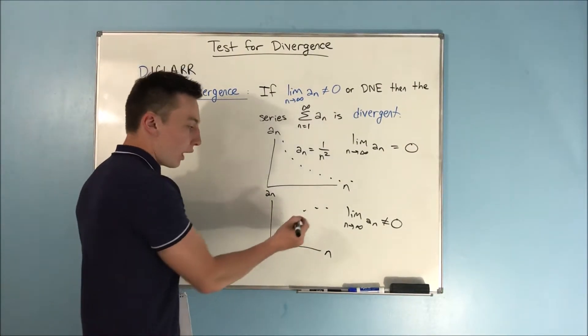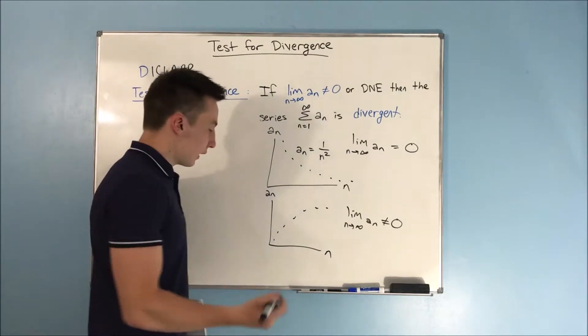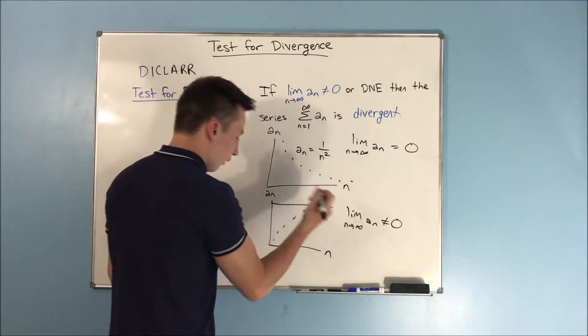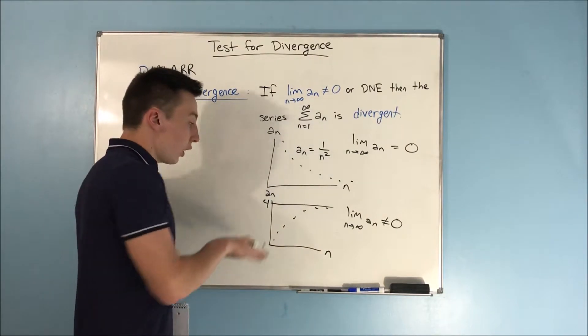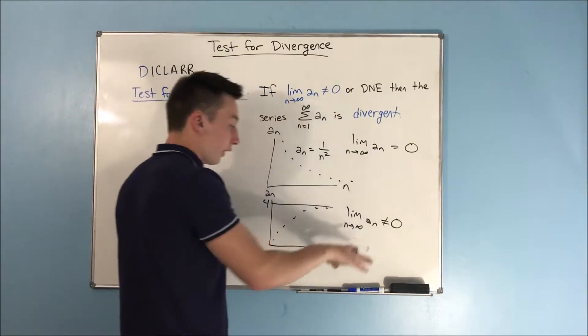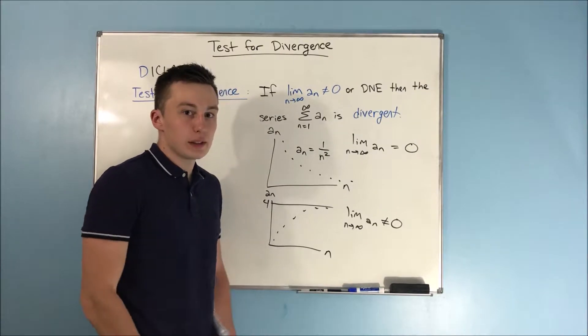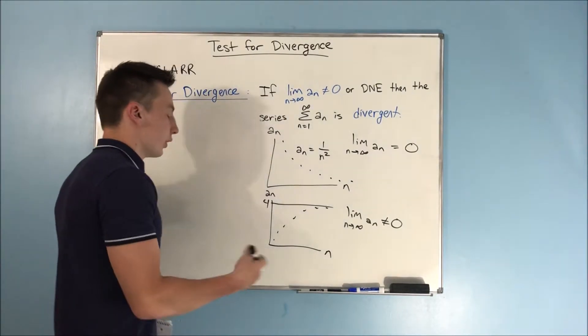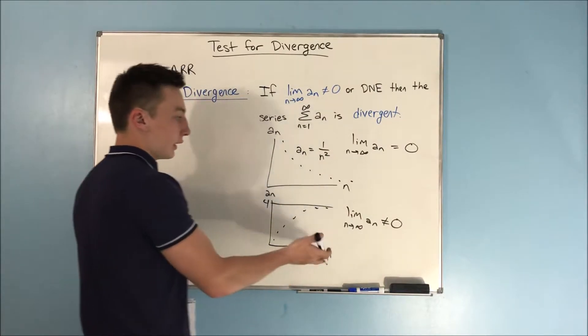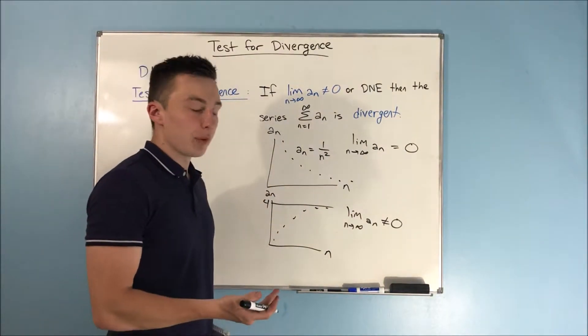Remember, we're adding up all these terms. And say that this was something like, I don't know, let's say four. Well, that means we're adding a bunch of terms that are very close to four onto infinity, which means our series is going to be divergent, right? So it's anything other than zero, then it's definitely going to be divergent.